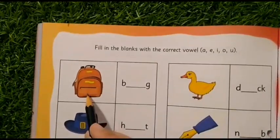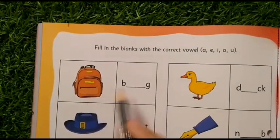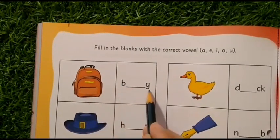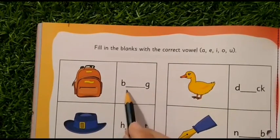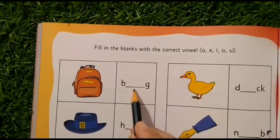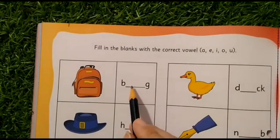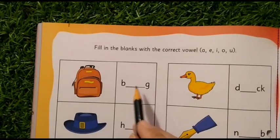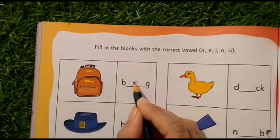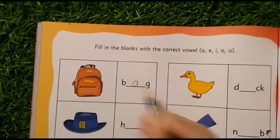Look at the picture. What is this? This is a picture of a bag. B is given and G is given. So, which vowel sound will come here? Bag. So, which sound? And which letter says Eh? So, here we will write letter A.